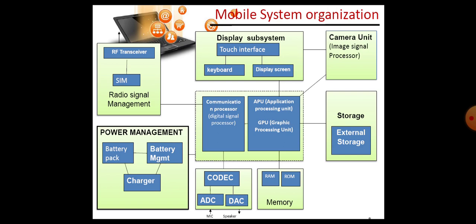The APU — application processing unit — is directly connected with the display subsystem. Display subsystem means a keyboard and a display screen, that is a touchscreen. It is also connected with the camera unit, also known as the image signal processor.